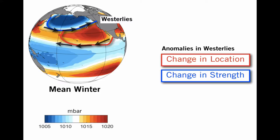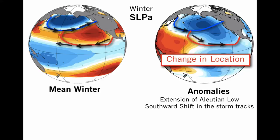Let's look at the change in location first, which is depicted here. The change in location typically happens when there is an extension of the Aleutian low southward, which also implies a southward shift in the storm tracks. This is a typical kind of atmospheric variability that we see during the Pacific Decadal Oscillation expression in the ocean.